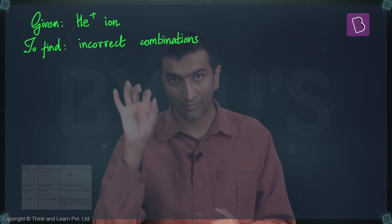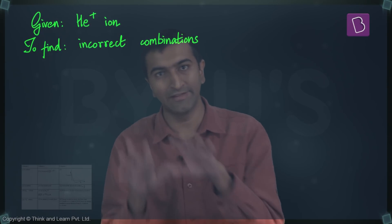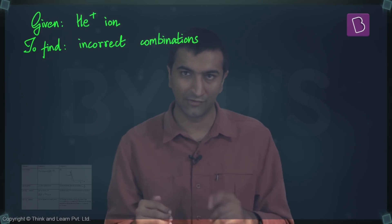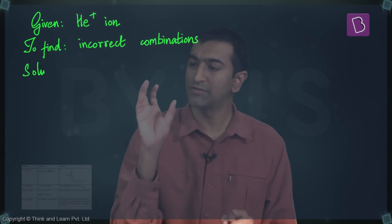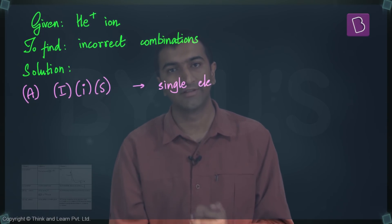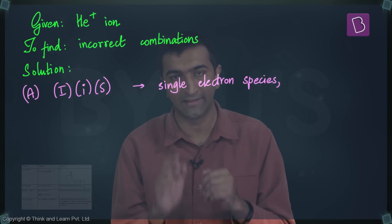Okay, so in this comprehension series let's look at the first question. It says that the He+ ion is given to you and you need to figure out the incorrect options amongst A, B, C, and D. So we're going to analyze them one by one. Option A says that one from the first column matches with one from the second column matches with S from the third column.